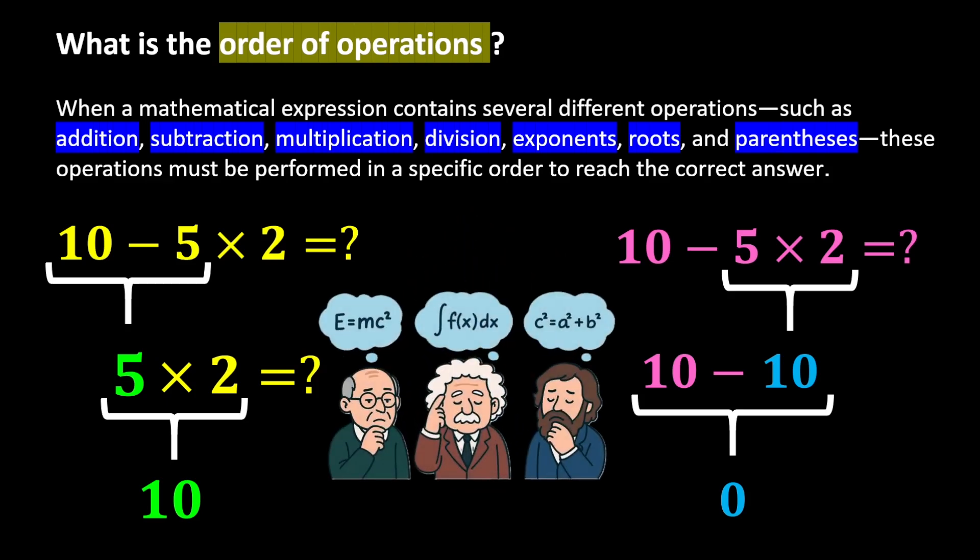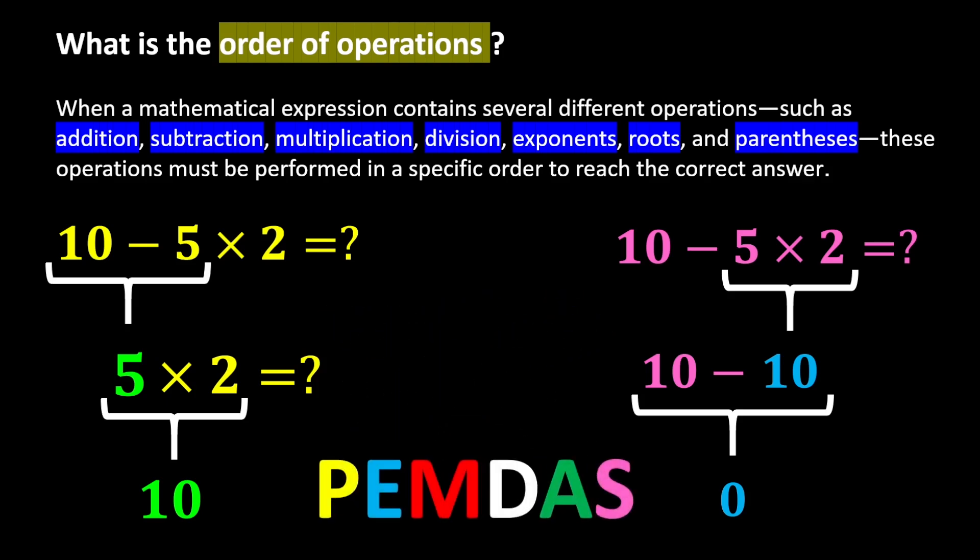To prevent disorder in mathematics, mathematicians agreed on a universal rule. This rule is called the correct order of operations, and it is known by a short abbreviation called PEMDAS, where each letter in the word PEMDAS stands for a specific step.